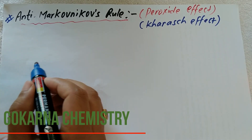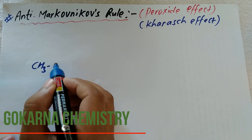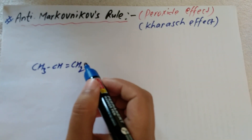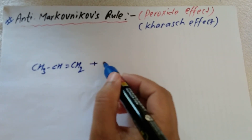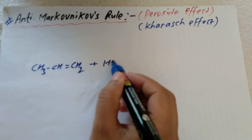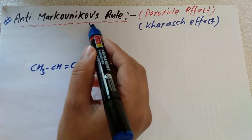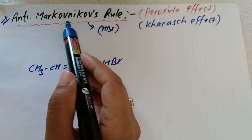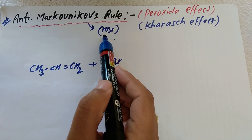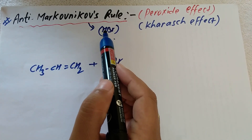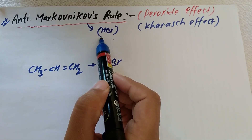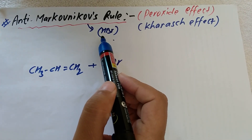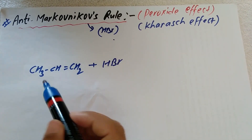In anti-Markovnikov's rule, let us take an example: the unsymmetrical alkene CH3-CH=CH2 (propene) reacts with the unsymmetrical reagent HBr. In anti-Markovnikov's rule, only HBr is used. But in Markovnikov's rule, we can use both HBr and HCl. So things to remember: in Markovnikov's rule, HCl and HBr can both be used as the reagent.